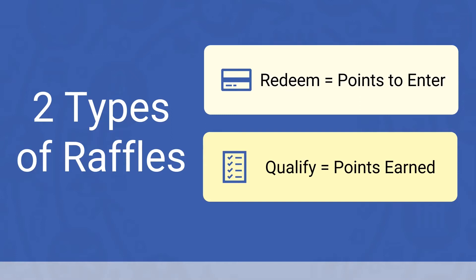The second type is called a qualifying raffle. This raffle does not cost points. The students earn their way into entering the raffle by earning points over a specified period of time or by earning points with a specific expectation. An example here might be a 25-point raffle for an Amazon gift card. Students that have earned 25 points over the grading period can be entered into the raffle for an Amazon gift card.